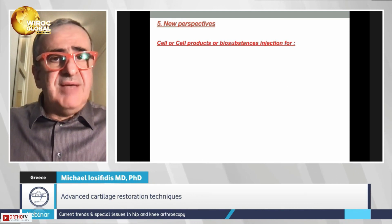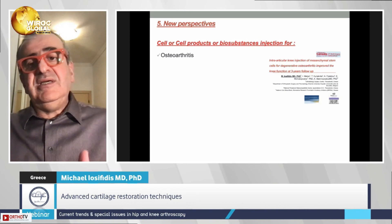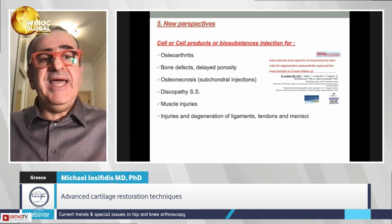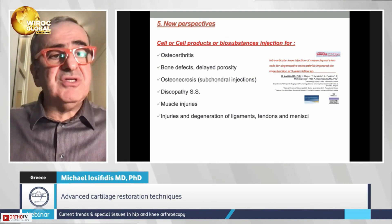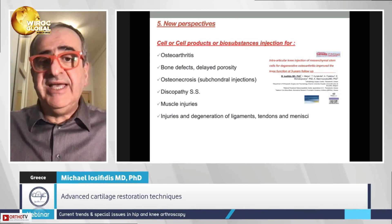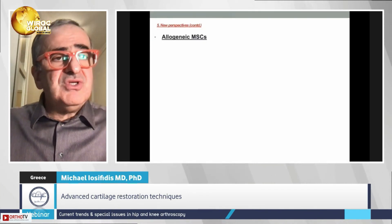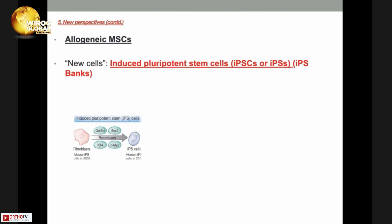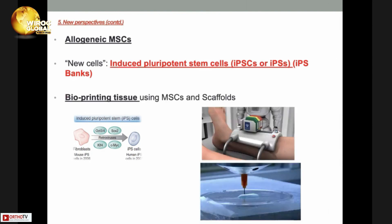New perspectives include using cell products or bio-substances from cells to treat not only osteoarthritis but also bone defects, delayed fracture healing, osteonecrosis, discopathy, muscle injuries, and degeneration of ligaments, tendons, and menisci. Allogeneic MSCs are being explored, as is reprogramming regular human cells to become multipotent or pluripotent stem cells — the well-known iPS cells. Using bioprinting technology with MSCs or iPS cells and scaffolds, it may become possible to construct damaged tissue parts and implant them into the human body.